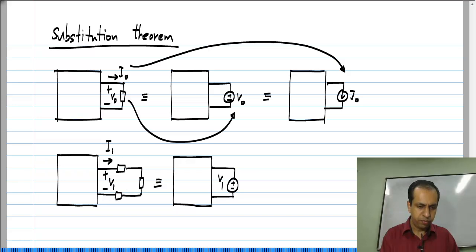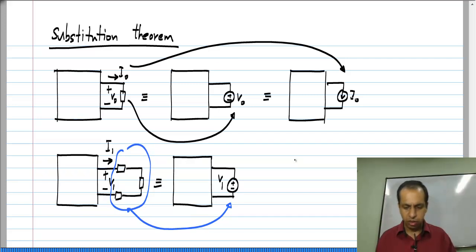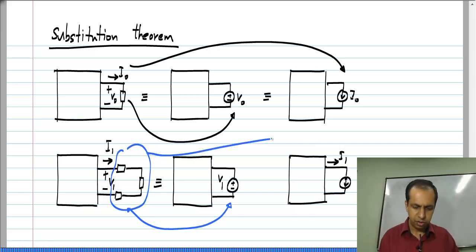Now, this is exactly equal to, I can replace all these three together with a voltage source of value V_1. So, I am replacing this whole series combination with that or I could also replace the series combination with the current source of value I_1. So, this is the extension, what you substitute does not have to be a single component, that is the point I am trying to make here.